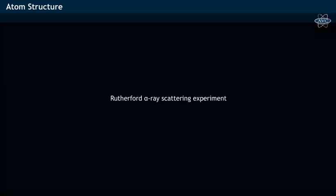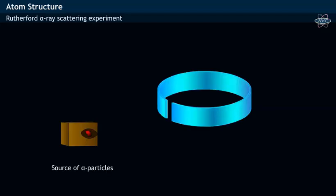Rutherford's alpha ray scattering experiment. The experimental apparatus of Rutherford consisted of a radioactive element like uranium, which is a source of alpha particles placed in a lead cage.